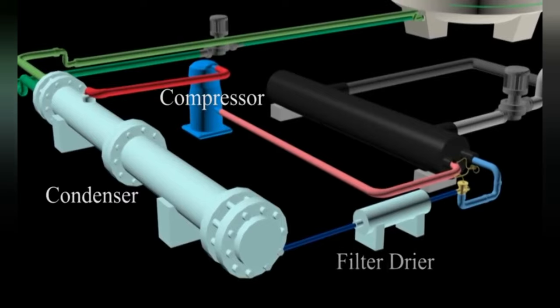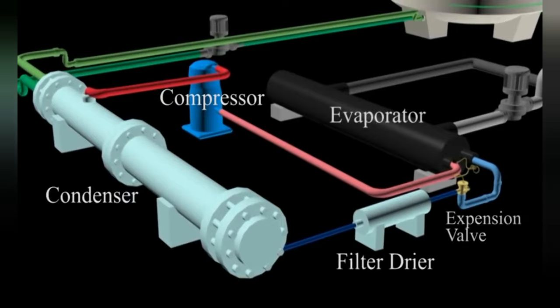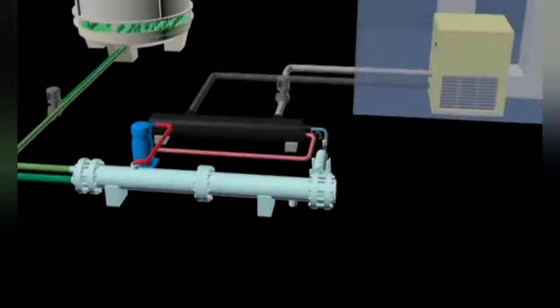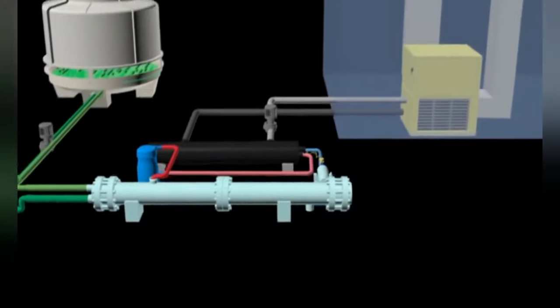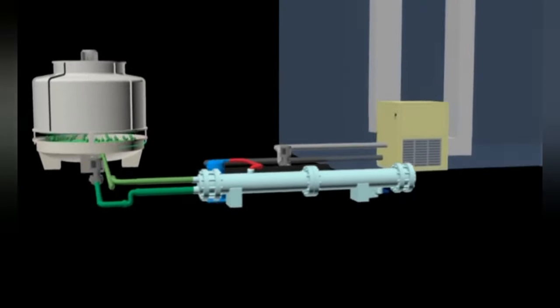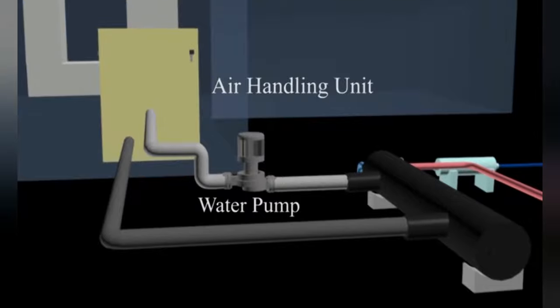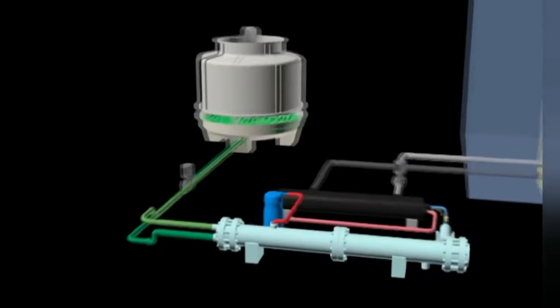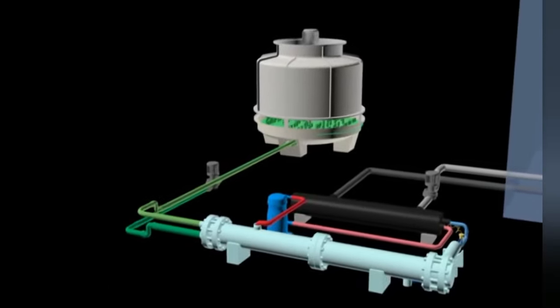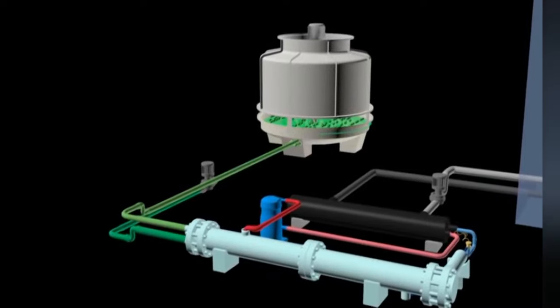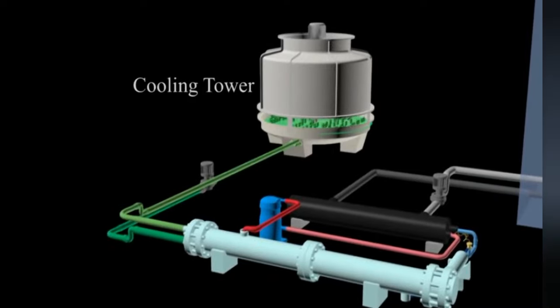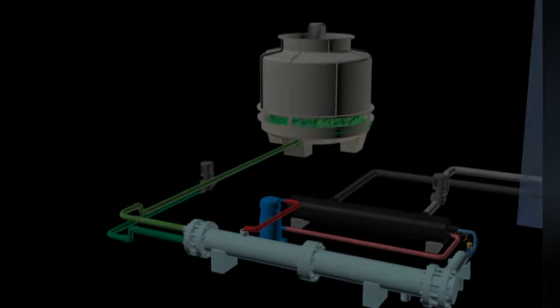For the chilled water cycle, the components involved are the air handling unit and water pump. In the condenser water cycle, the components needed for the process are the cooling tower and water pump.